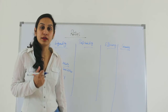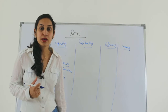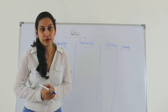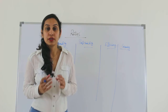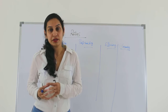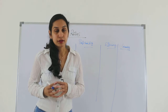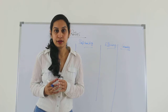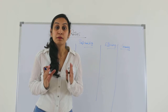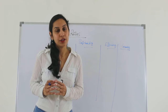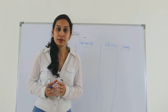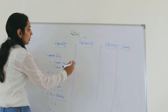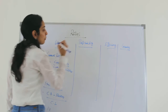Primarily, we calculate current ratio and quick ratio under liquidity. There can be further variations to liquidity ratios which include debtor turnover period, inventory turnover period, and creditor turnover period — we shall discuss those ratios separately. Here we are just discussing the basics of liquidity ratios.